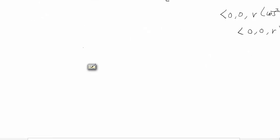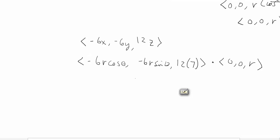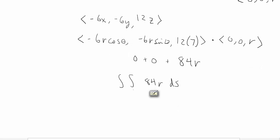Now we take the dot product of the curl of the vector field with the normal vector. The curl was (−6x, −6y, 12z). Since we reparameterized to polar coordinates, we substitute: x = r cos θ, y = r sin θ, z = 7, giving (−6r cos θ, −6r sin θ, 84). Dotting with (0, 0, r) gives 0 + 0 + 84r. We set this up as a double integral with r from 0 to 3 and theta from 0 to 2π, rewriting dS as dr dθ.